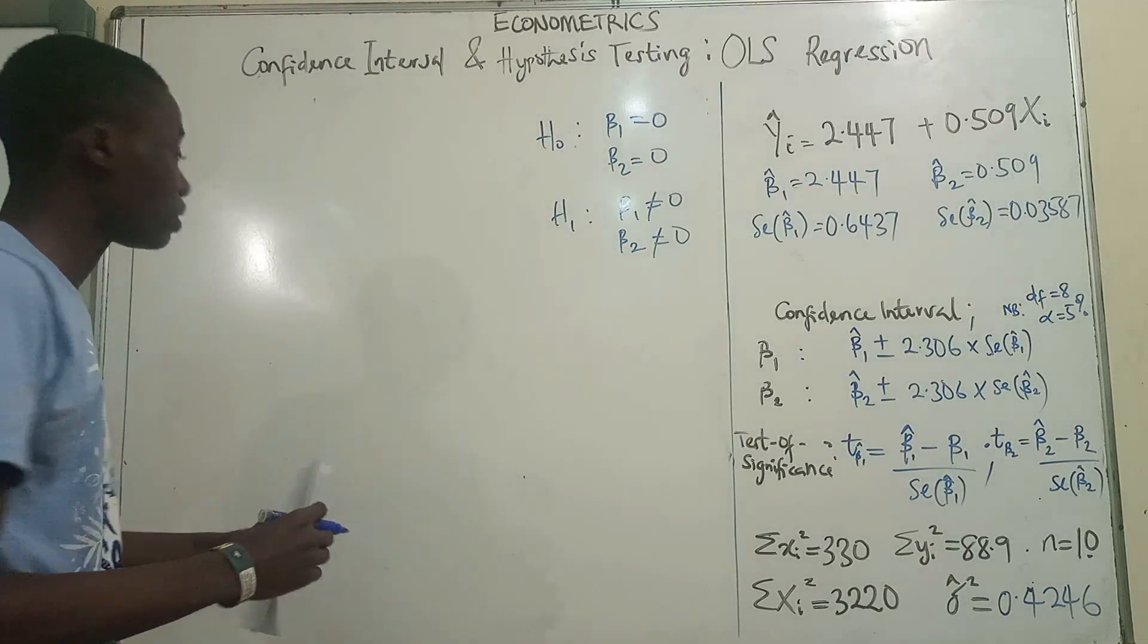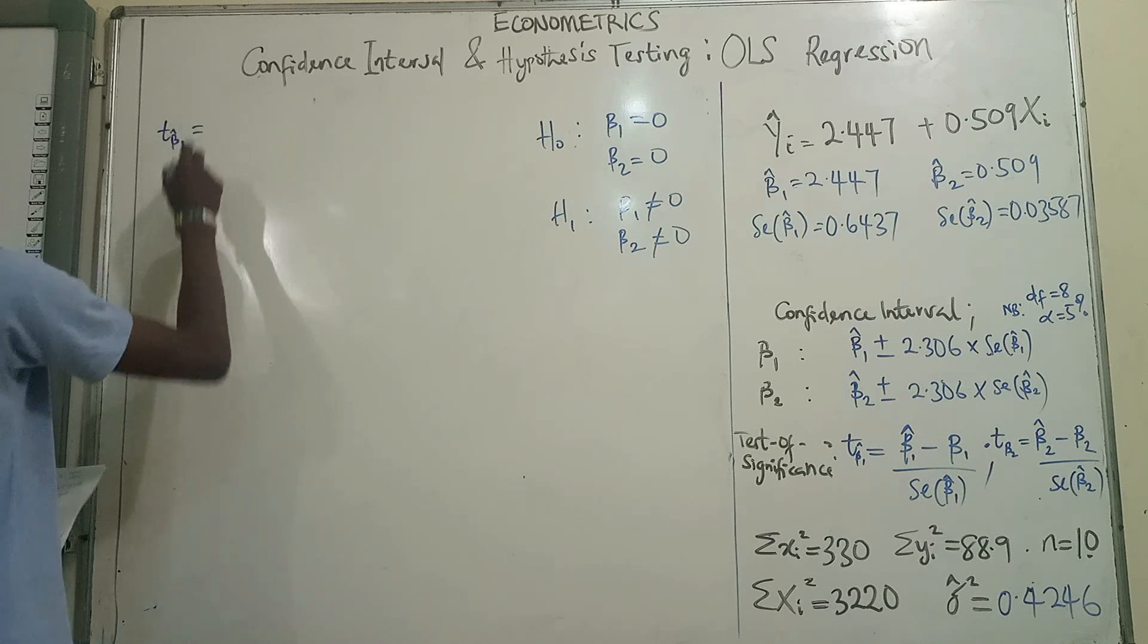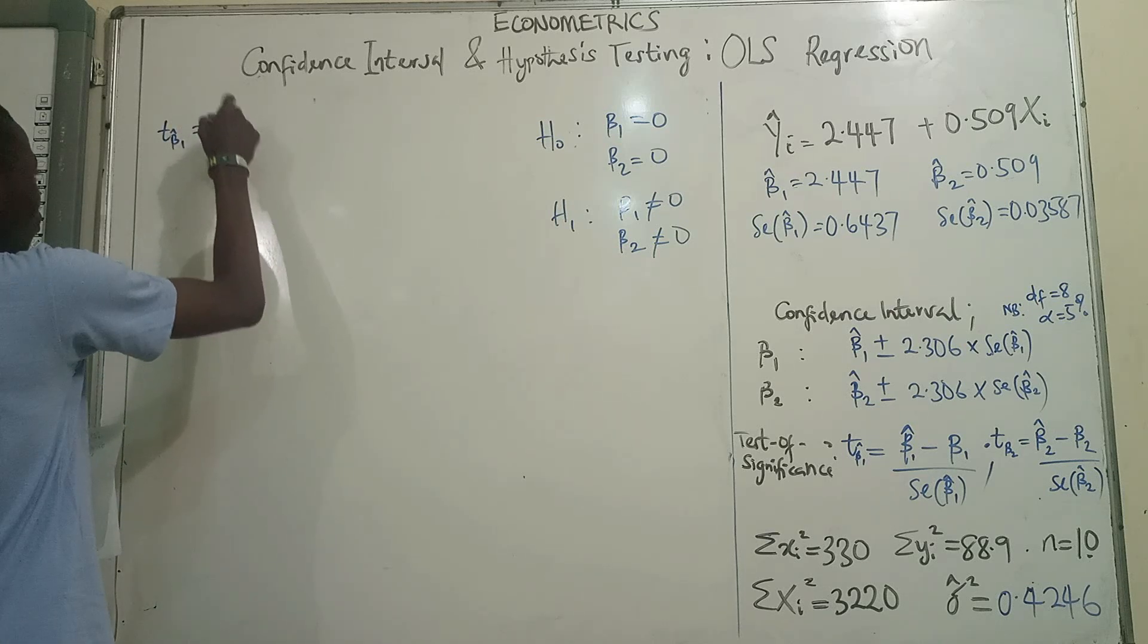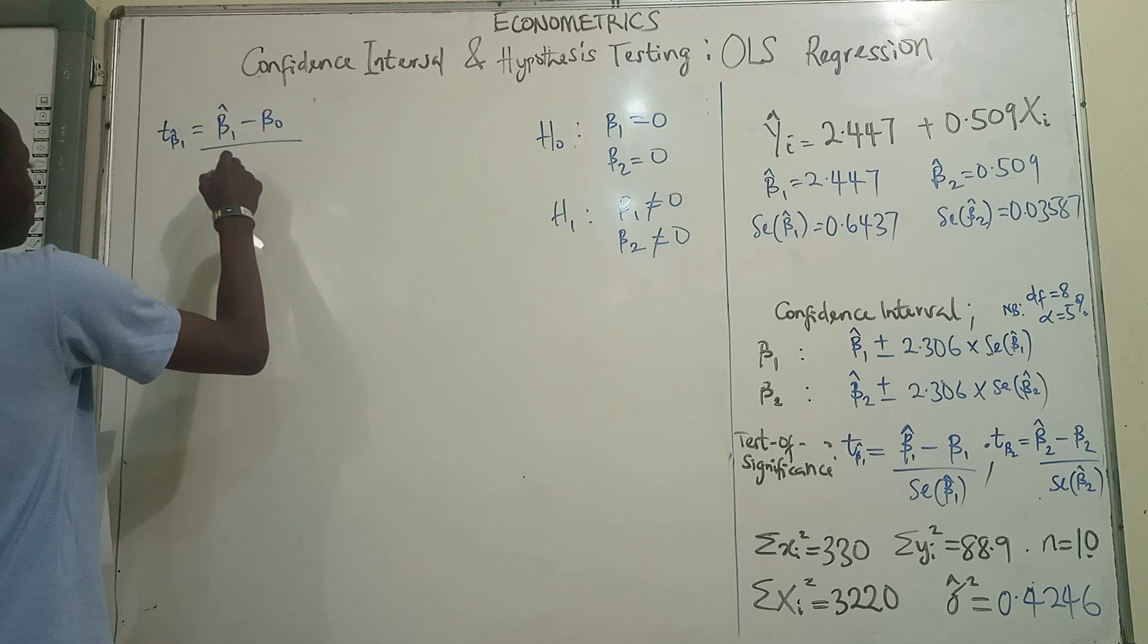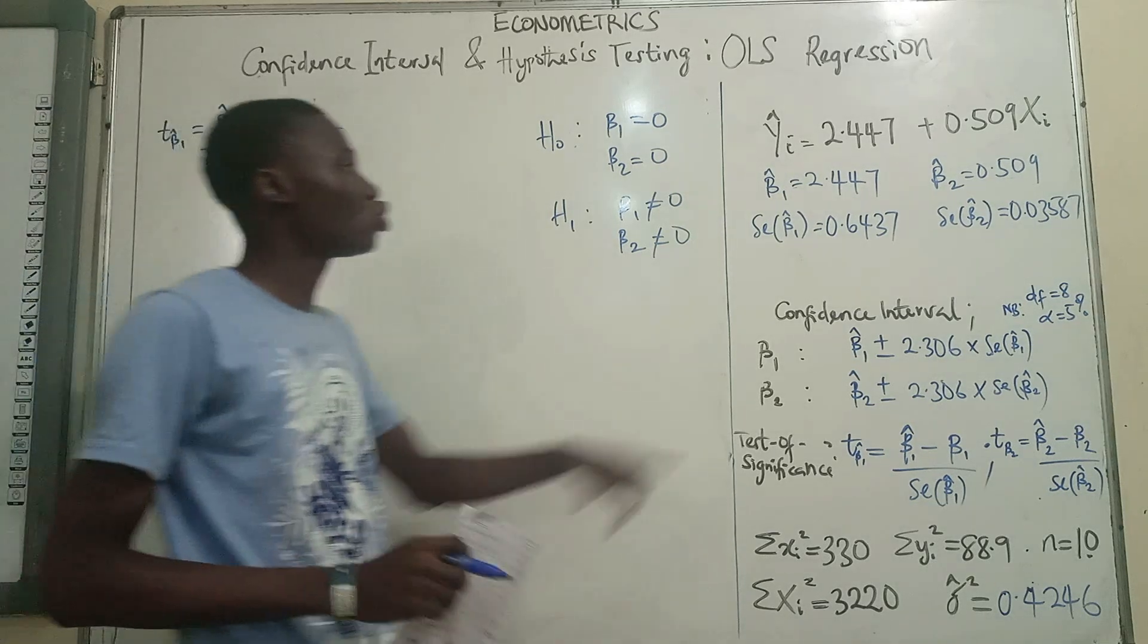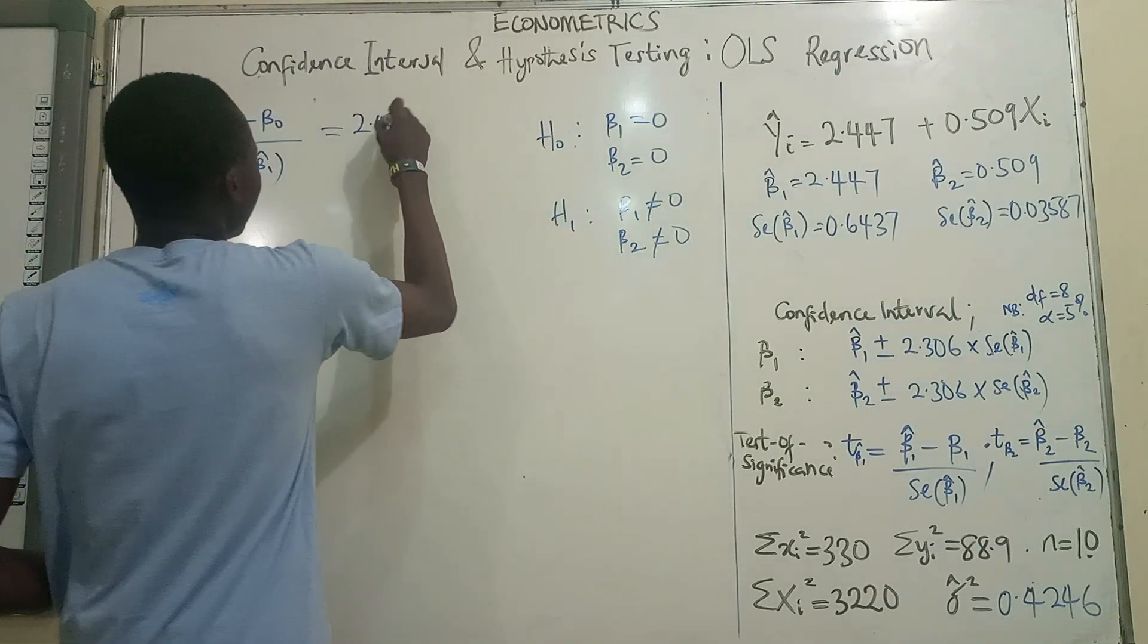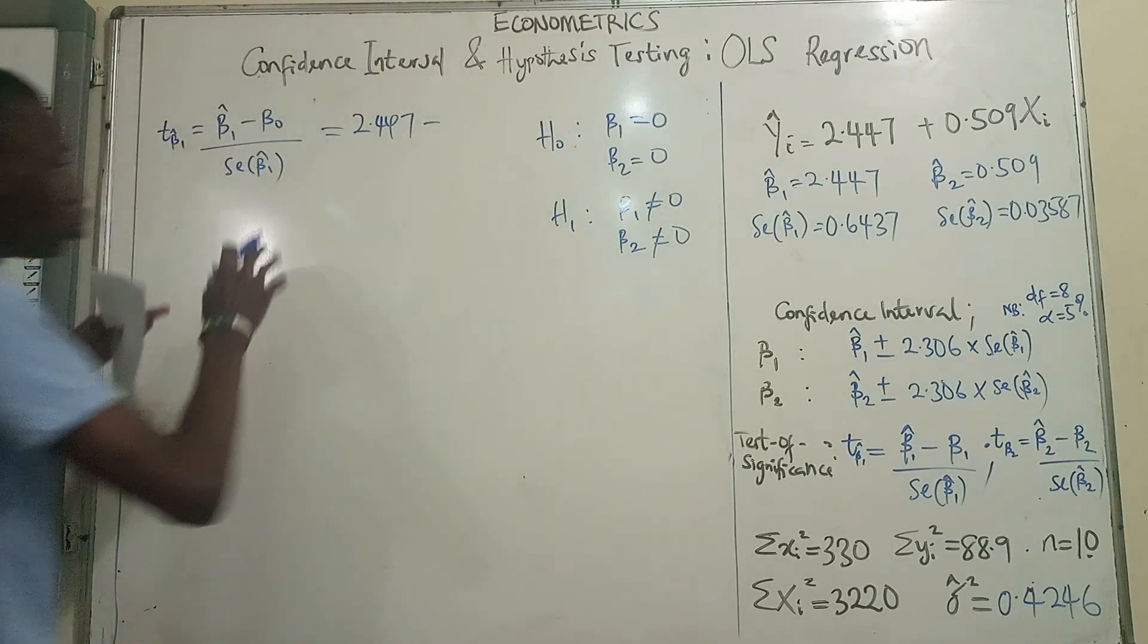We'll compute our T statistics for beta 1. The estimated minus the true over the standard error of what we estimated. Now, the estimated for beta 1 is 2.447. Now, what is the true parameter?